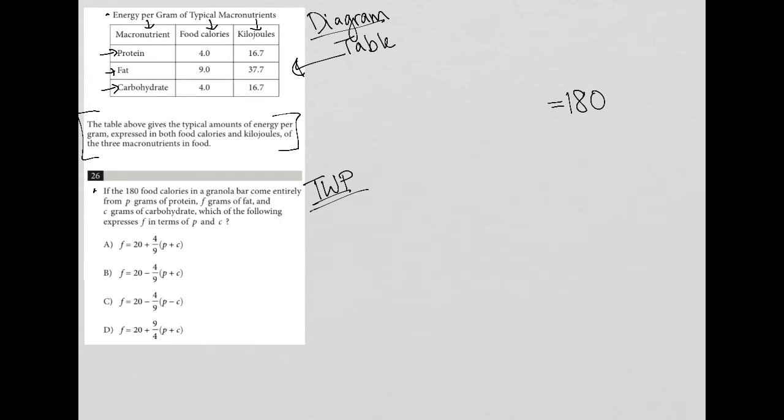Well, we know that we're not looking at the kilojoules column. We're looking at the food calories because that's what it says, 180 food calories. So we know that it's going to be a combination of protein, fat, and carbohydrates. So the question says it comes from P grams of protein.